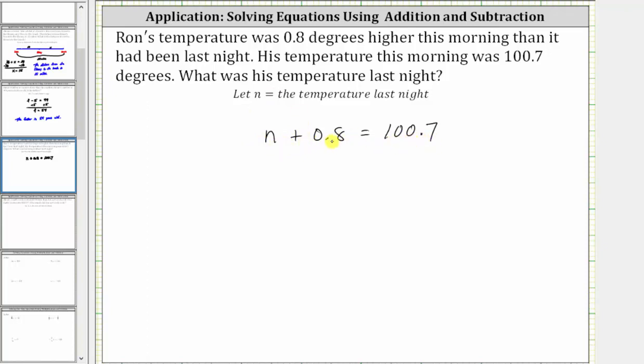And now to solve for n, we undo the addition by subtracting 0.8 on both sides. And we line up the corresponding place values when adding or subtracting decimals. Simplifying, 0.8 minus 0.8 is zero, giving us n equals.